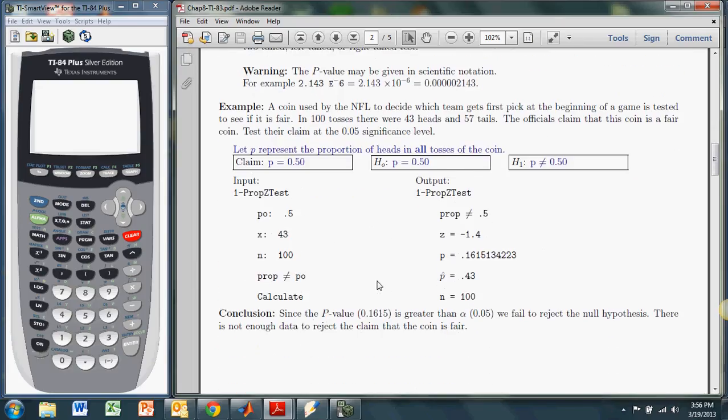We have a coin used by the NFL to decide which team gets to pick first at the beginning of the game. In 100 tosses of the coin, there were 43 heads. The officials claim this coin is fair. In other words, they're claiming that the proportion of heads in all tosses of the coin is 0.5 or 50%. We're going to test this claim at the 0.05 significance level.